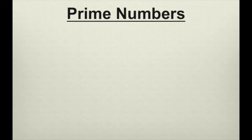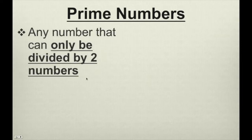So first of all, what exactly are prime numbers? A prime number is any number that can only be divided by two numbers, and those two numbers are 1 and itself.